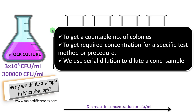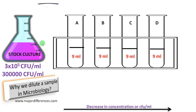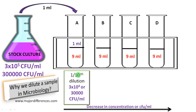So let us see what is actually happening. We have four test tubes: A, B, C, and D. We have taken 9 ml of diluent in all test tubes. First, we are transferring 1 ml of the stock culture into 9 ml of test tube A.